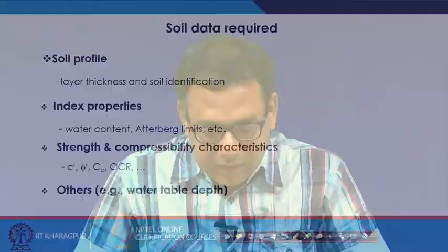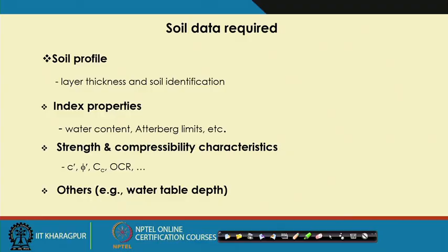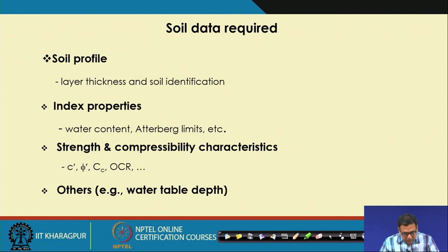I have already discussed how we can determine the maximum past effective overburden stress — the preconsolidation pressure Pc — by Casagrande's method. We can get that value from the e-log P curve and by applying Casagrande's method we can determine Pc, which is the past maximum effective overburden stress that the soil has experienced. The ratio between the maximum past stress and the present stress is the OCR. The water table location is also required for design purposes.